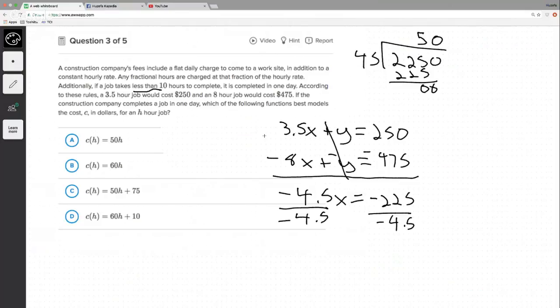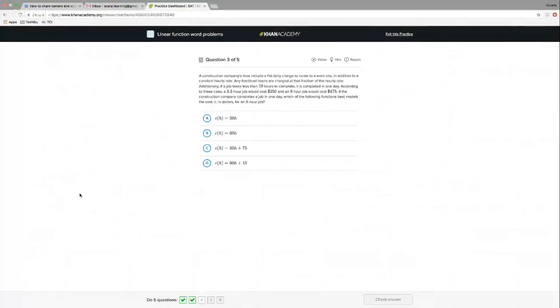So it's $50 per hour, and then it's $75 flat fee, so it's going to be this one, C, because it's $50 per hour and a $75 flat fee. Sorry, I got confused there for a second.